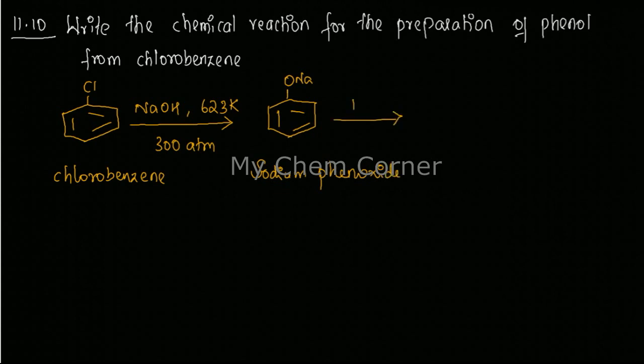with H+ will give phenol. So it's a very simple reaction where you will get your product formed. From chlorobenzene, it will form sodium phenoxide on reaction with NaOH at a particular temperature